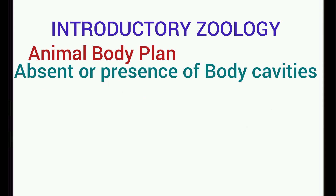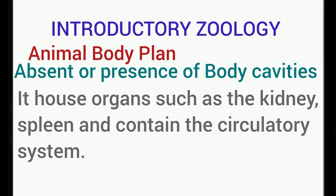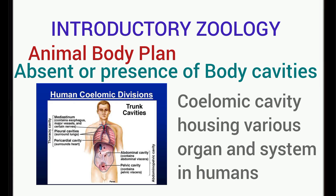Let's talk about the presence or absence of body cavity as another determinant of animal body plan. Animals can be grouped according to their body cavity type or lack thereof. The epithelial-lined cavity is a space usually filled with body fluid which lies between the gut or the digestive system and the body wall. This space within the body houses organs such as the kidney and spleen and contains the circulatory system. The true body cavity arises from the mesoderm layer and is lined by the mesodermal peritoneum.